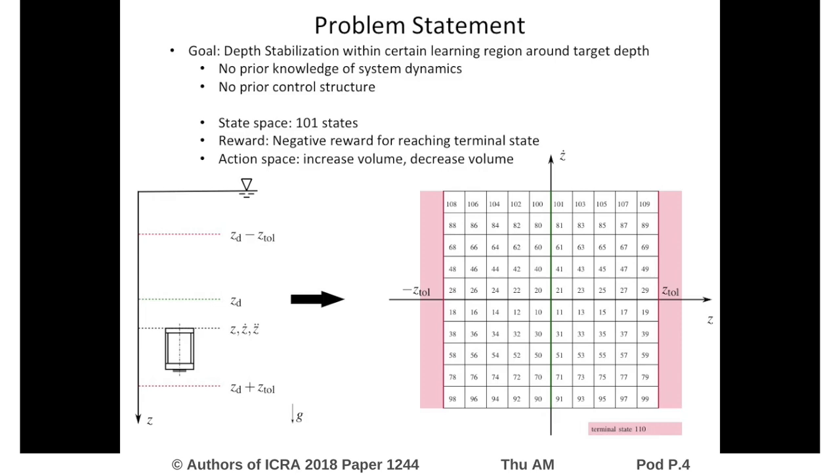The challenges are due to the unknown hydrodynamic effects and the slower actuator dynamics. The time constant of volume adjustment is similar to the system dynamics. Also, the adjustable volume is small compared to the fixed volume and hence the maximum control force is also small and constrained.